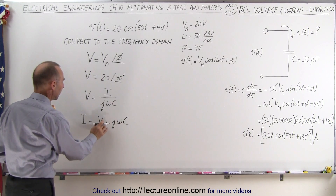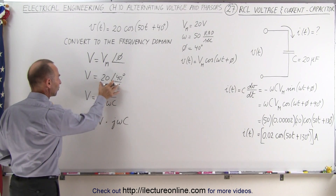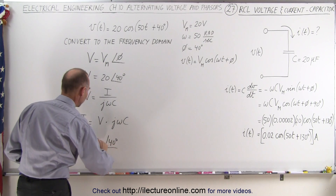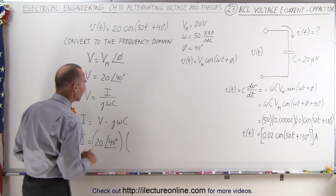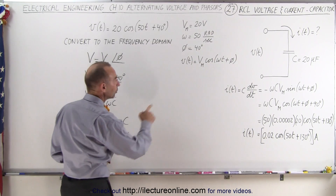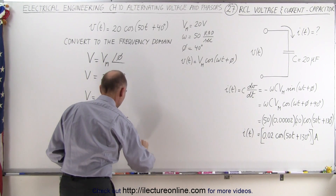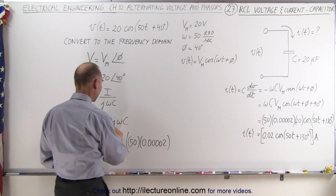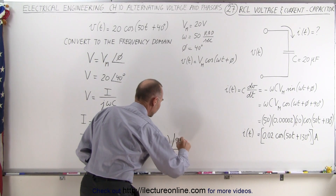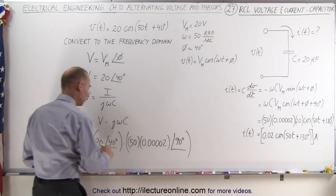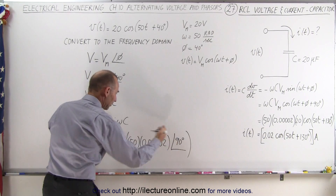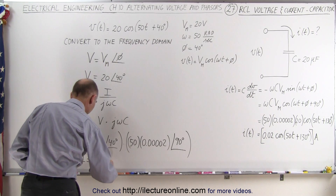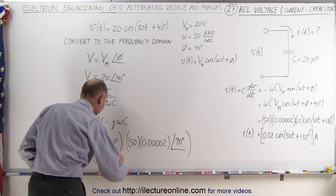Now we write the expressions. We have the voltage in the frequency domain, so the current I is equal to 20 with a phase angle of 40 degrees, multiplied by j·omega·C. Omega times C gives us the amplitude: omega is 50 and C is 0.00002. And j gives us a phase angle of 90 degrees. Multiplying these together — we multiply the amplitudes and add the phase angles — I equals 0.02 with a phase angle of 40 plus 90, which is 130 degrees.